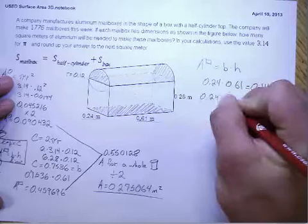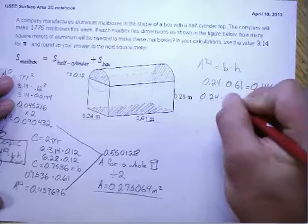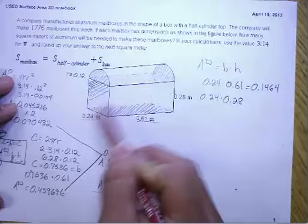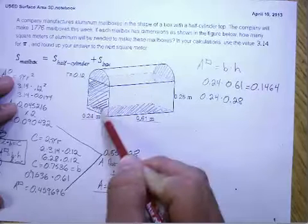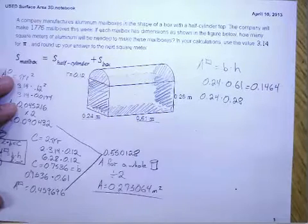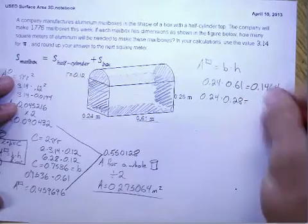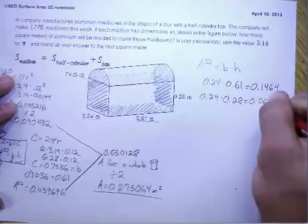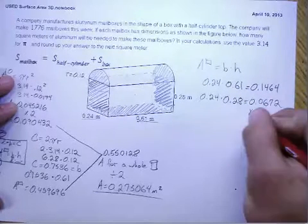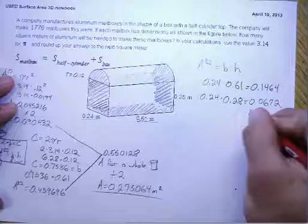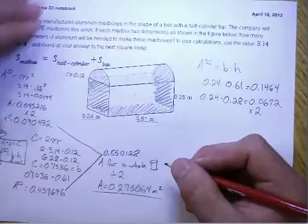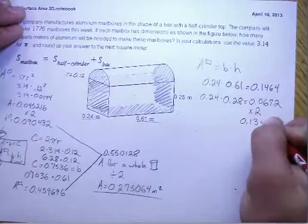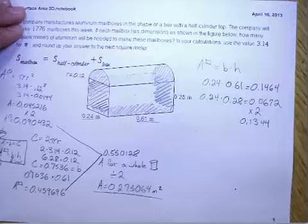Now I have 0.24, and I'm going to multiply it by 0.28. In doing that, I'm finding the sides of our box. When I multiply those together, I get 0.0672. And since I have two sides, I need to multiply that whole thing by two, and I get 0.1344.